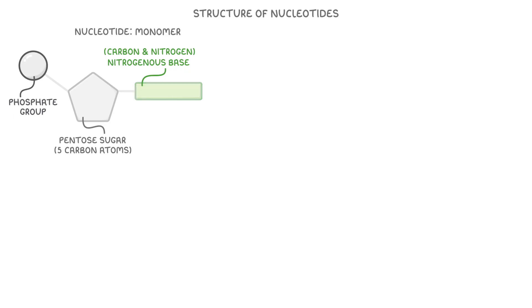Let's start with the structure of nucleotides. Each nucleotide is a monomer that has three main parts: a pentose sugar with five carbon atoms, a nitrogenous base that contains carbon and nitrogen, and a phosphate group.